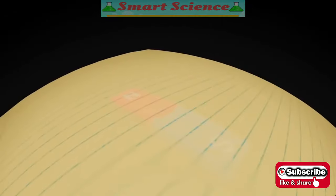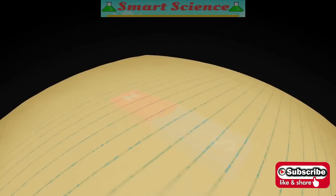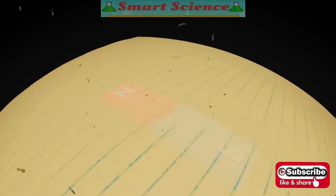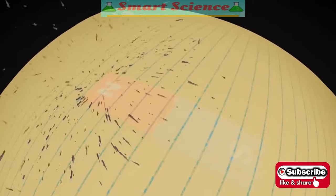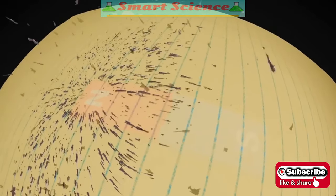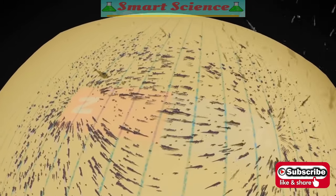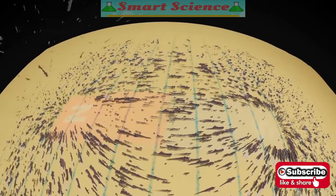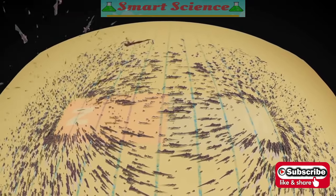We can see a bar magnet's magnetic field by dropping iron filings on a piece of paper above the magnet. The filings line up with the direction of the magnetic force. Earth's magnetic field has these same lines of force connecting its north and south poles.